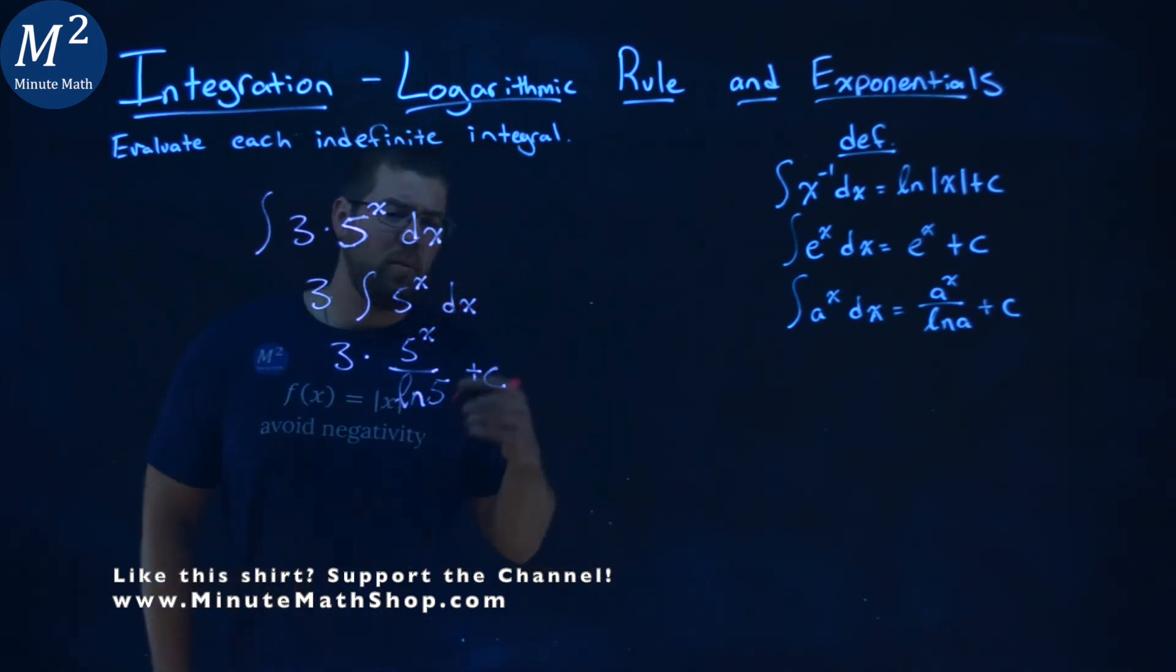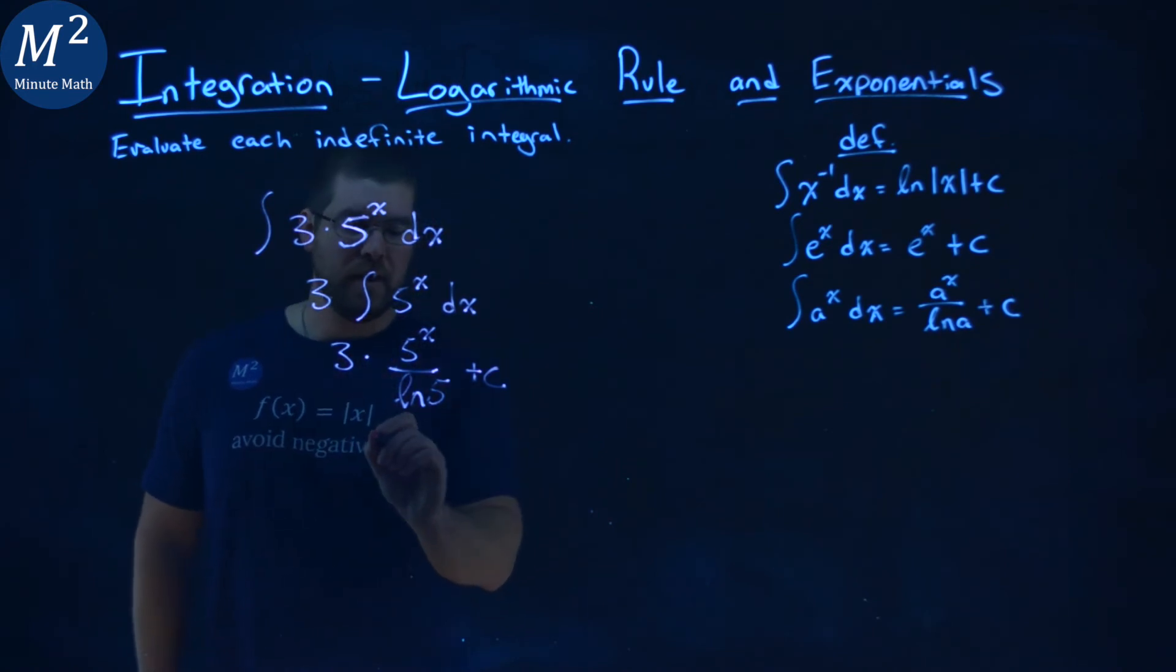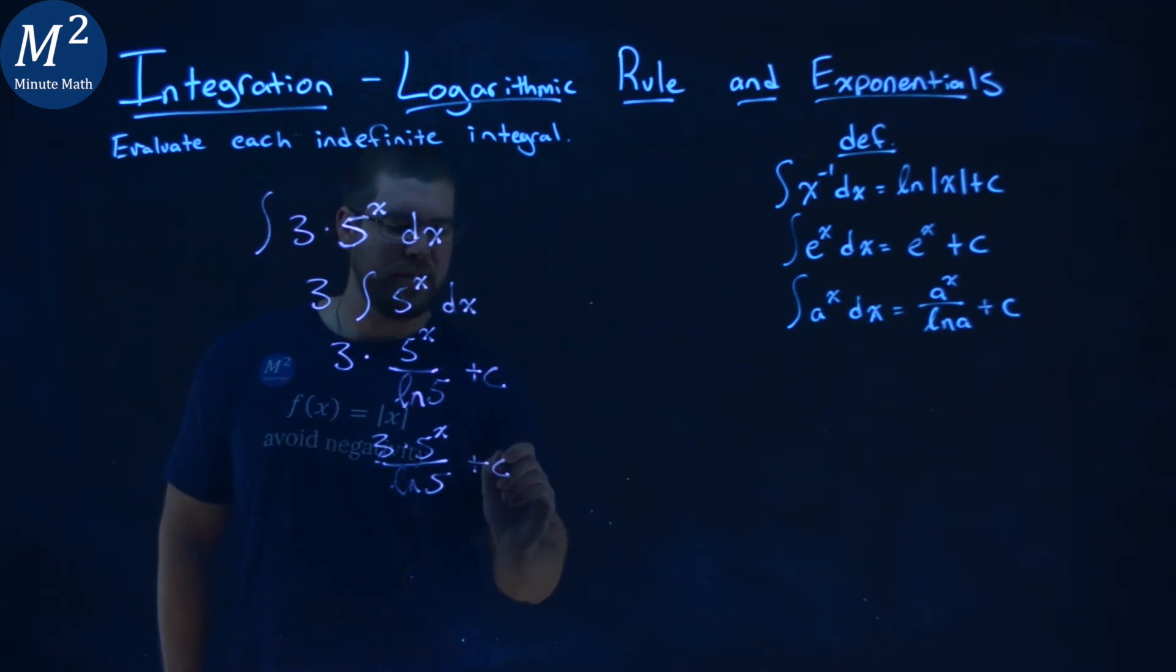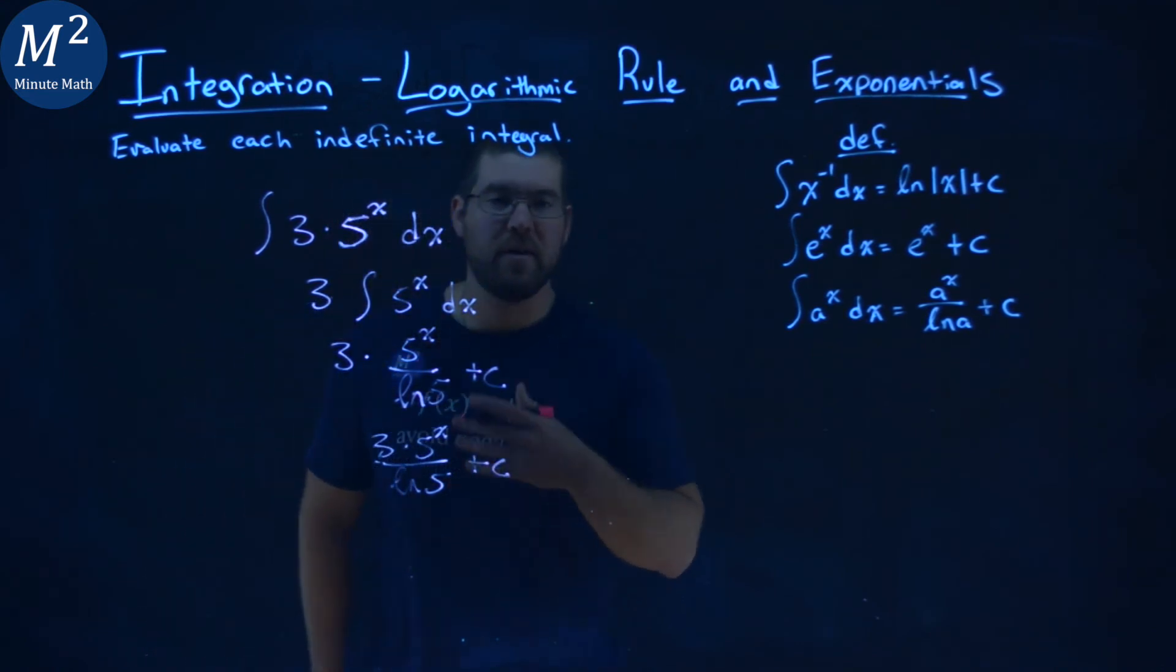And so we can rewrite this to be one large fraction to finish it out here with a 3 up top. So we have 3 times 5 to the x power over the natural log of 5 plus c. And there we have it, our final answer.